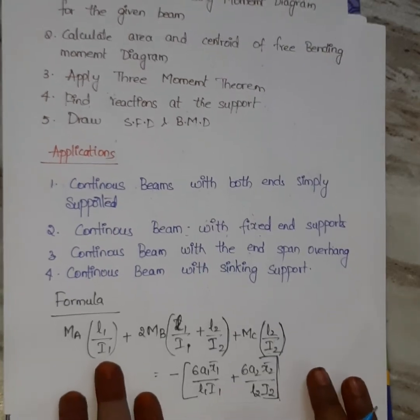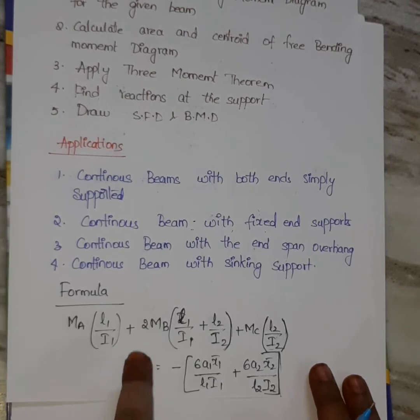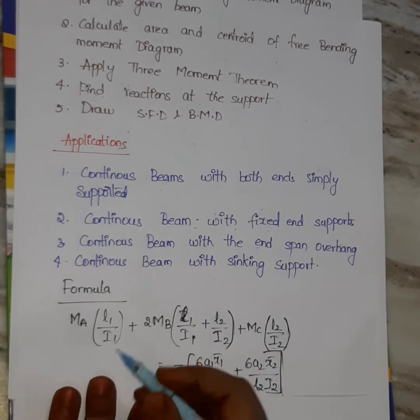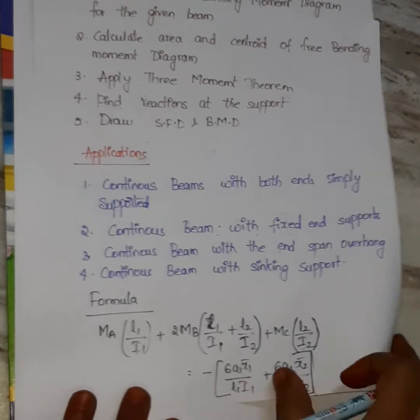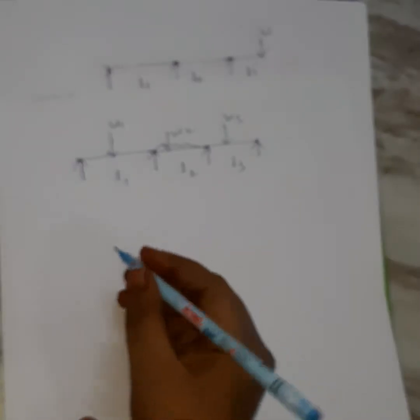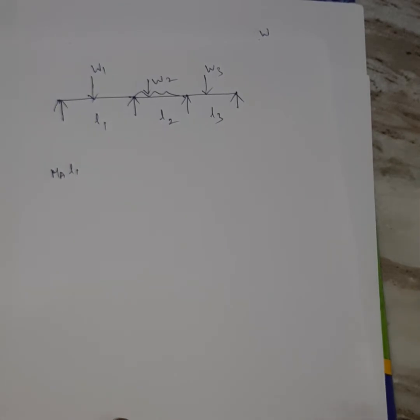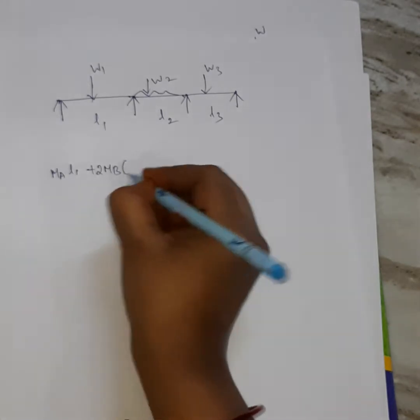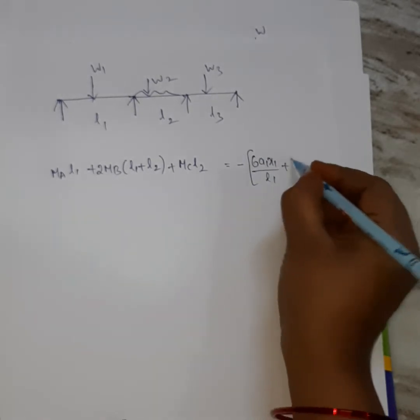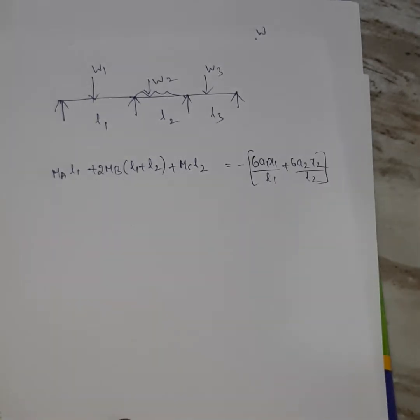The formula is Clapeyron's theorem — also known as the three-moment theorem. This is the most important formula for solving continuous beam problems. The general formula is: MA·L1 + 2MB·(L1 + L2) + MC·L2 = −(6A1x1/L1 + 6A2x2/L2). This is the basic formula for Clapeyron's theorem.